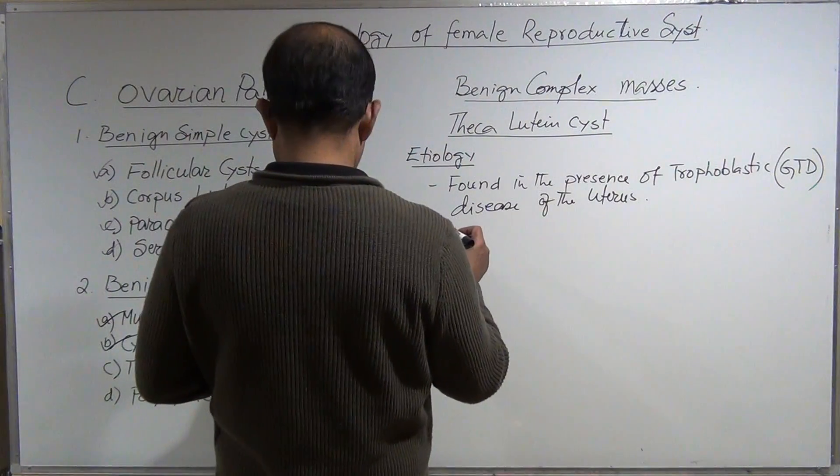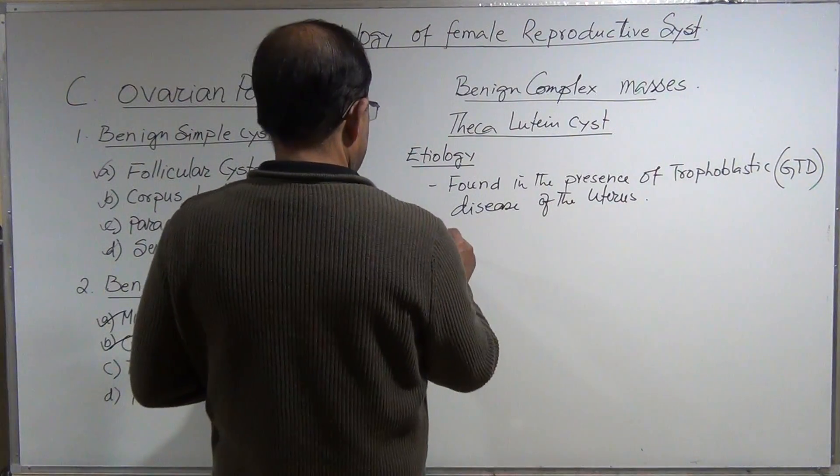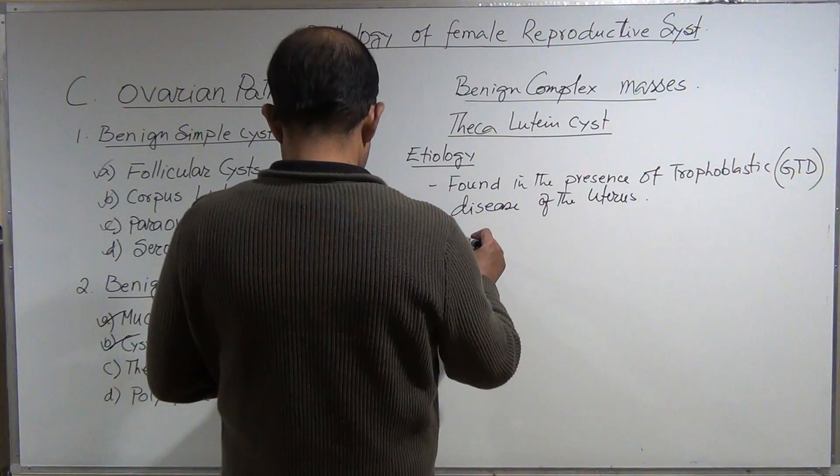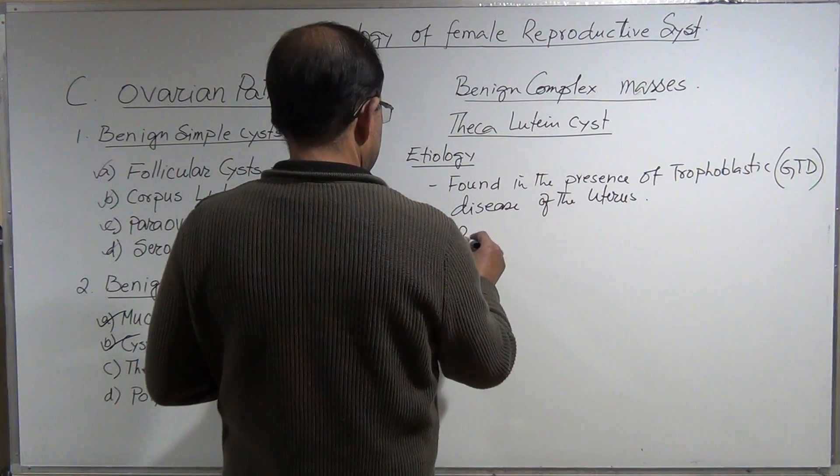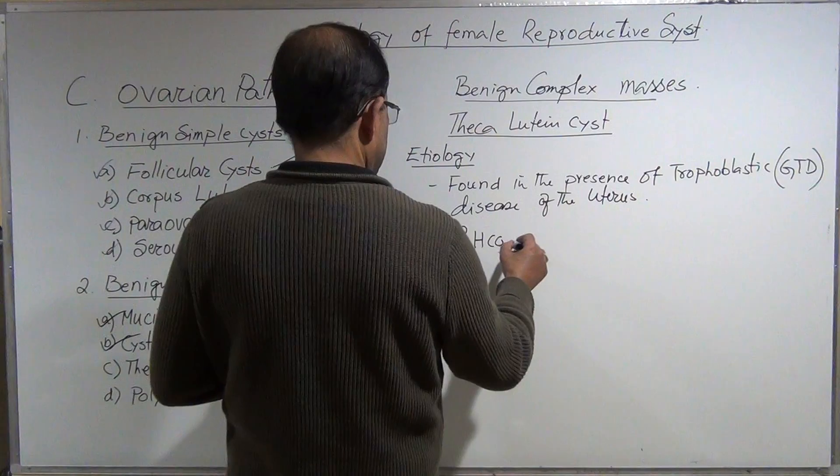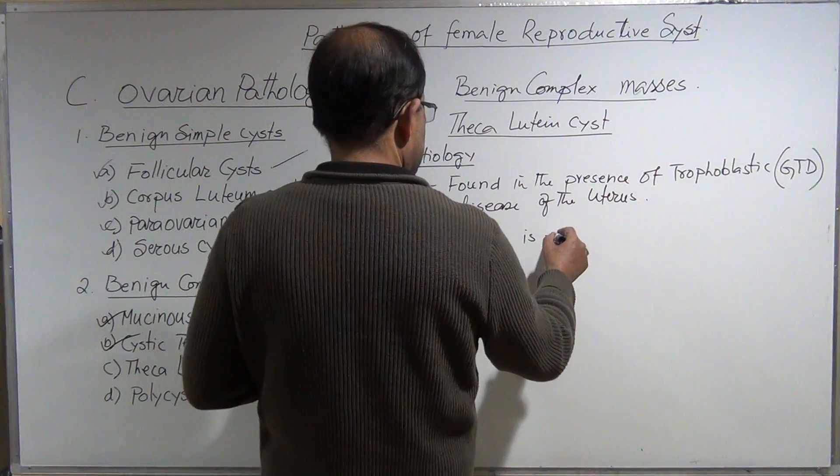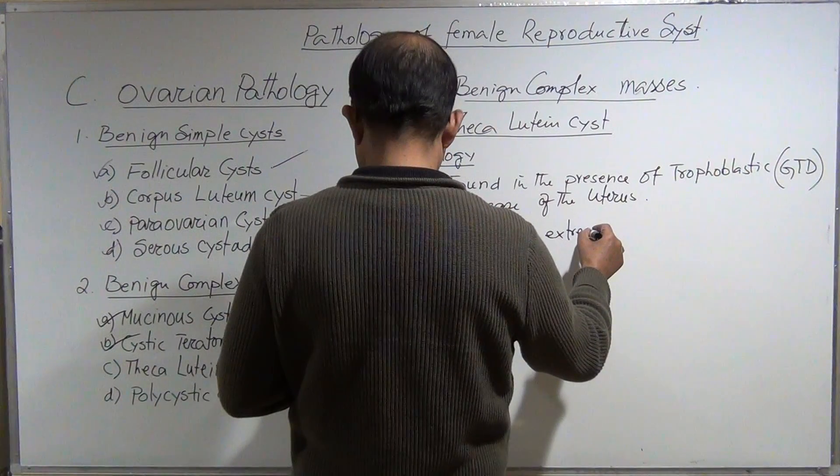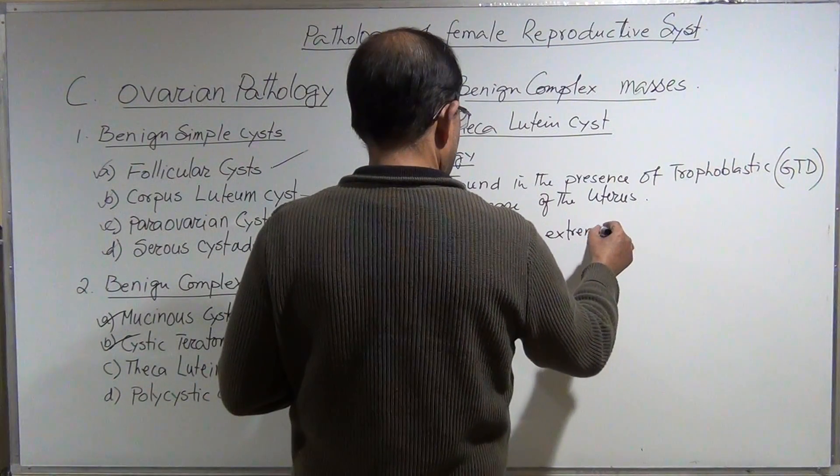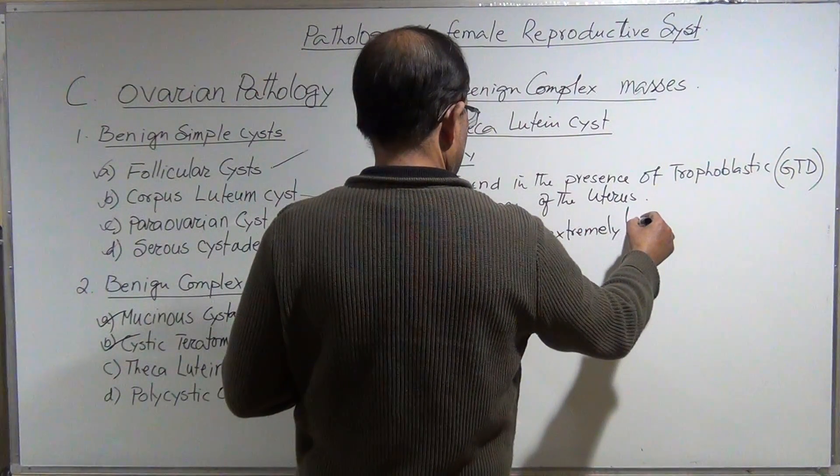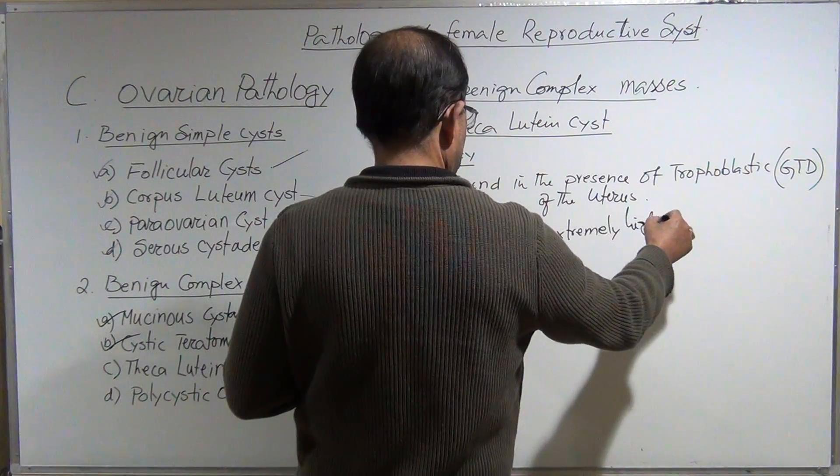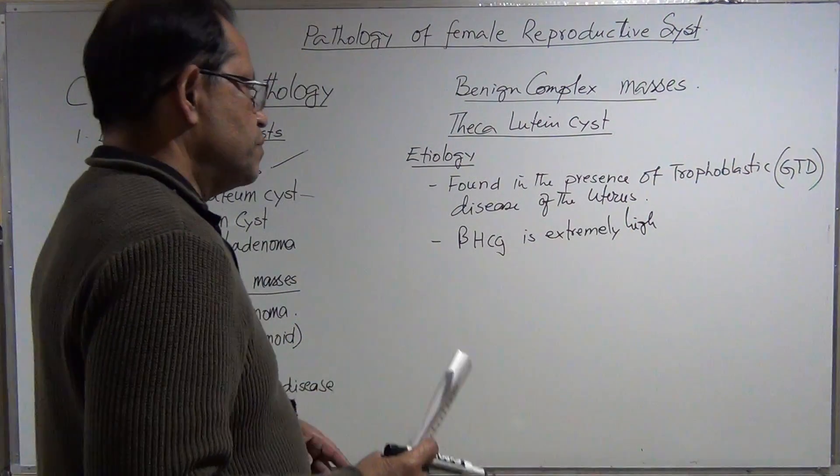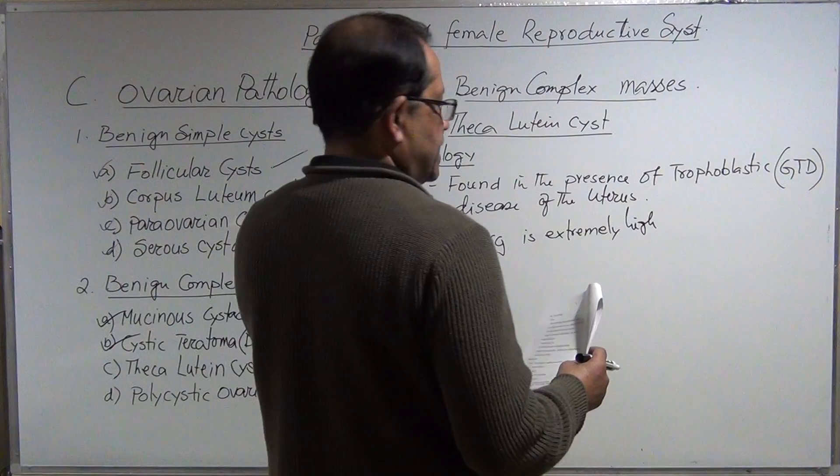Extremely high beta hCG—extremely high, five to ten times higher than normal.